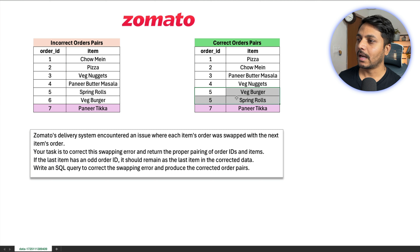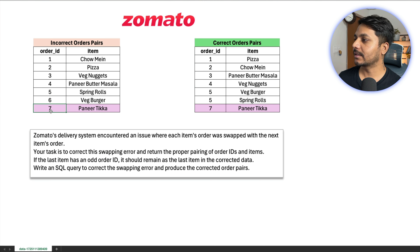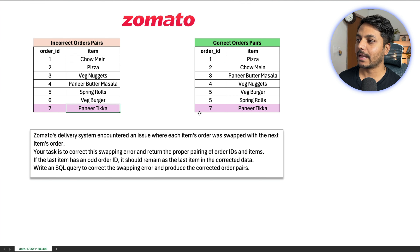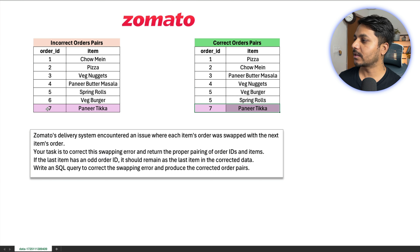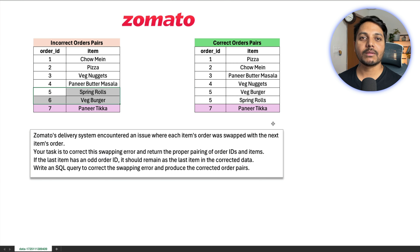I have swapped it. Now the last order ID is an odd number, so this will remain the same. You can see we have 7 as Paneer Butter Masala, and in the corrected output it remains 7 as Paneer Butter Masala because this is the odd order ID. So let's solve this problem today.